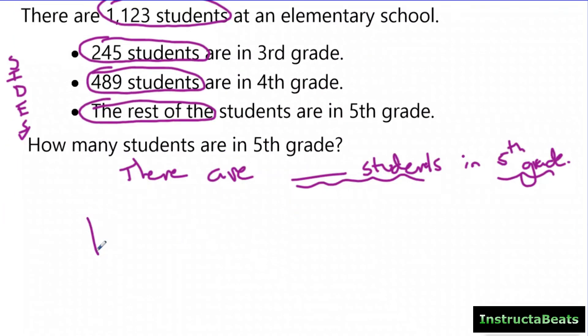So I'm going to draw my tape diagram. And I know this is a part-whole model because they gave me the whole and then they gave me all the different parts of it. And my whole for my tape diagram is 1,123 students. I like to label that what it is when I can. And I know I had third grade, fourth grade, and then the rest were in fifth grade.